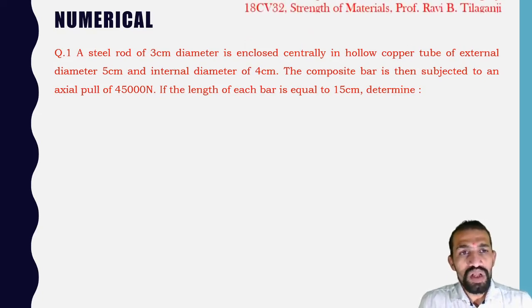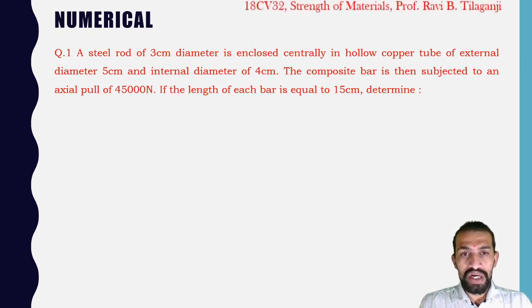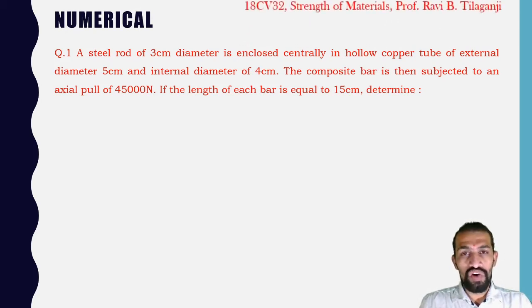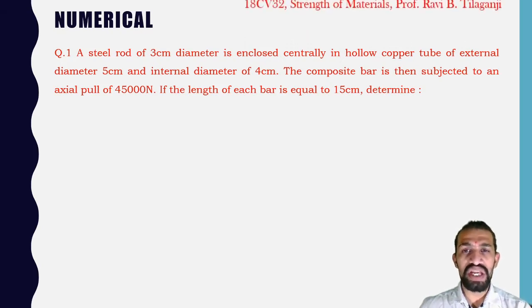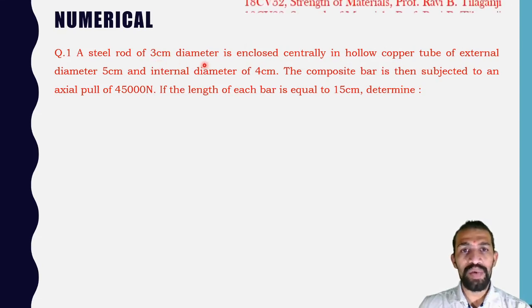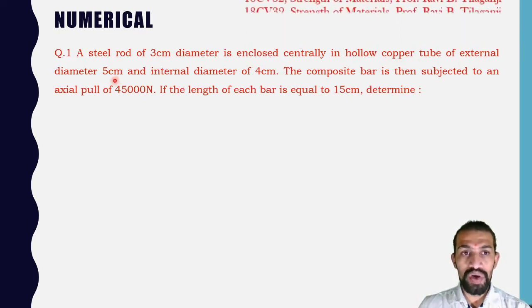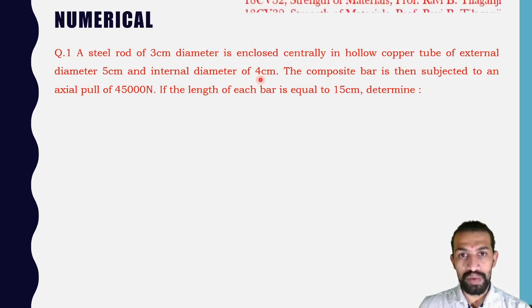First numerical: a steel rod of 3 centimeter diameter is enclosed centrally in a hollow copper tube of external diameter 5 centimeter and internal diameter 4 centimeter. The steel rod is solid and the copper tube is hollow.